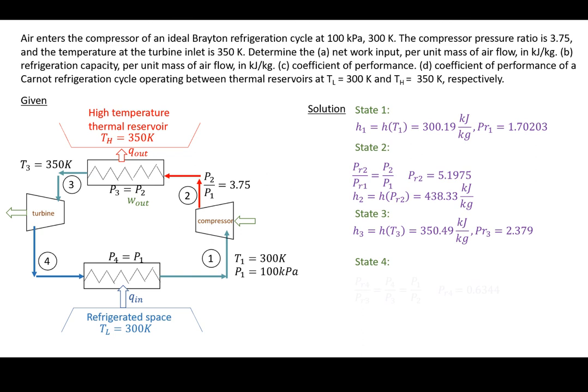All right. So state four, I'm applying an isentropic relationship, and I do note that P4 and P1 are equal to one another, and P3 and P2 are equal to one another. So I can calculate PR4, and then go to my ideal air tables and interpolate for the correct value of H4.